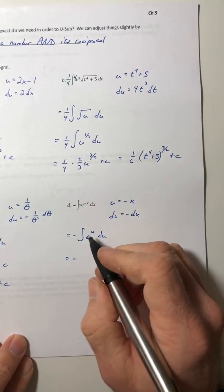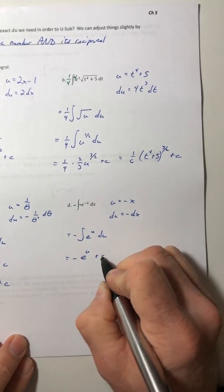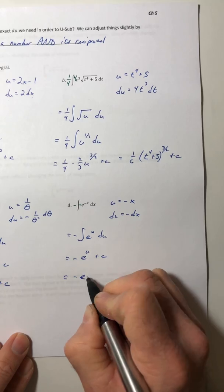So the integral of e to the u is e to the u, and then change it back into terms of x.